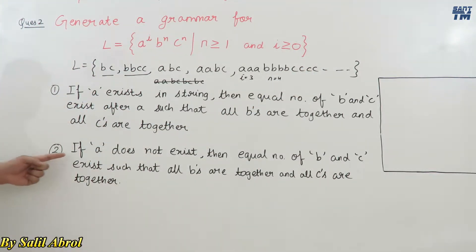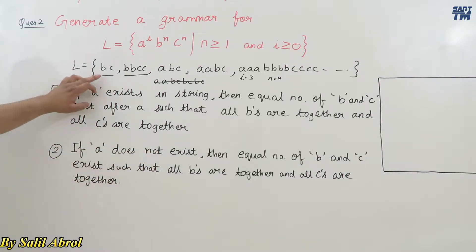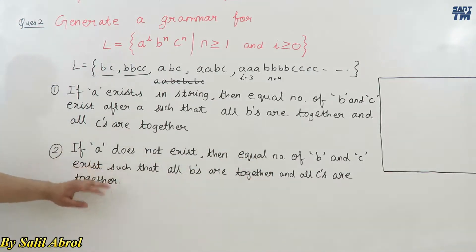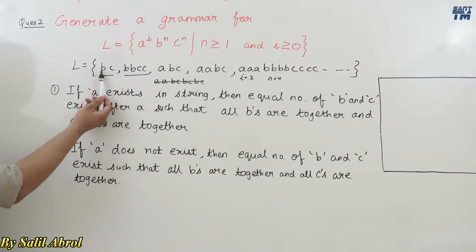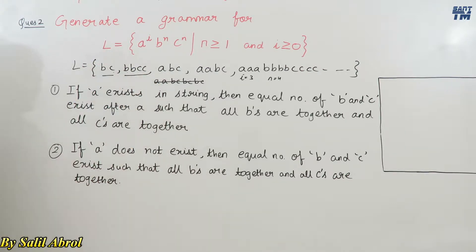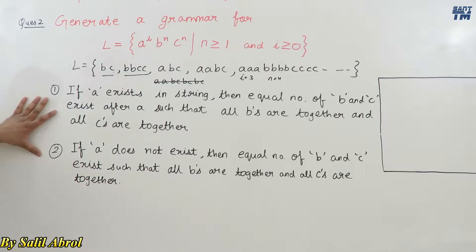Second, if 'a' does not exist in the string, then an equal number of b's and c's exist such that all b's are together and all c's are together — for example, bc or bbcc. Both points are now clear.